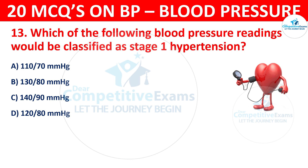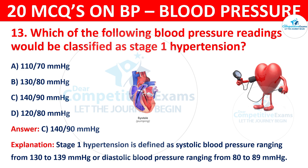The correct answer is C, 140/90 mmHg. Stage 1 hypertension is defined as a systolic blood pressure ranging between 130–139 mmHg, or a diastolic blood pressure ranging from 80 to 89 mmHg.